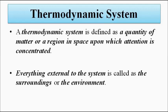A thermodynamic system is nothing but a quantity of matter, a substance, or a region in space upon which we focus our attention. For example, we can take the human body as a system. The amount of food and oxygen we take in is the energy going in, and the carbon dioxide and waste products lost through excretion are what goes out — that is a simple example of a system.